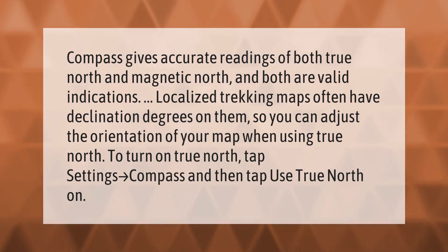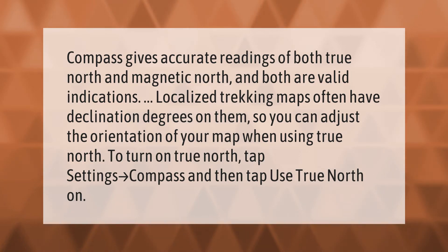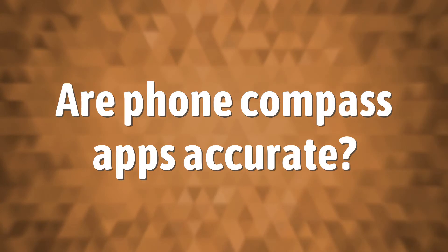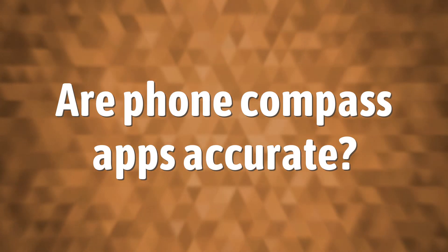To turn on true north, tap Settings, then the right-pointing arrow, then Compass, and tap 'Use True North' on.